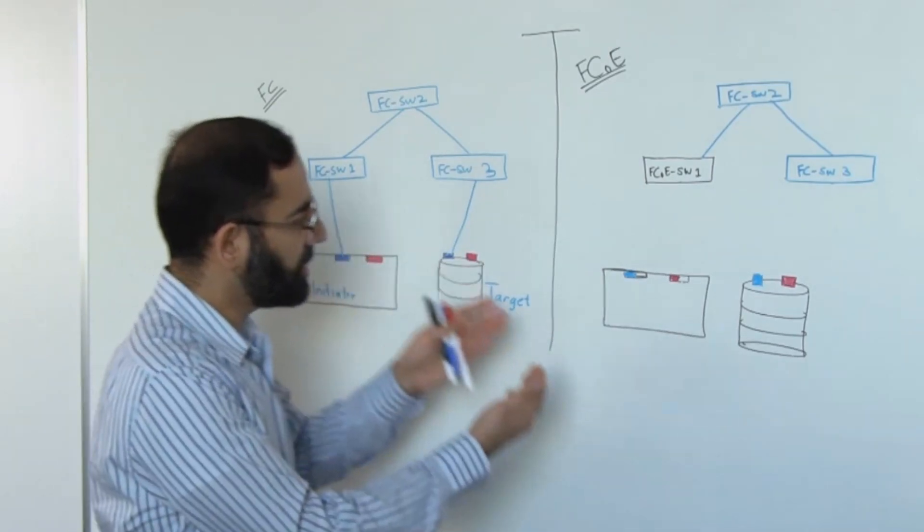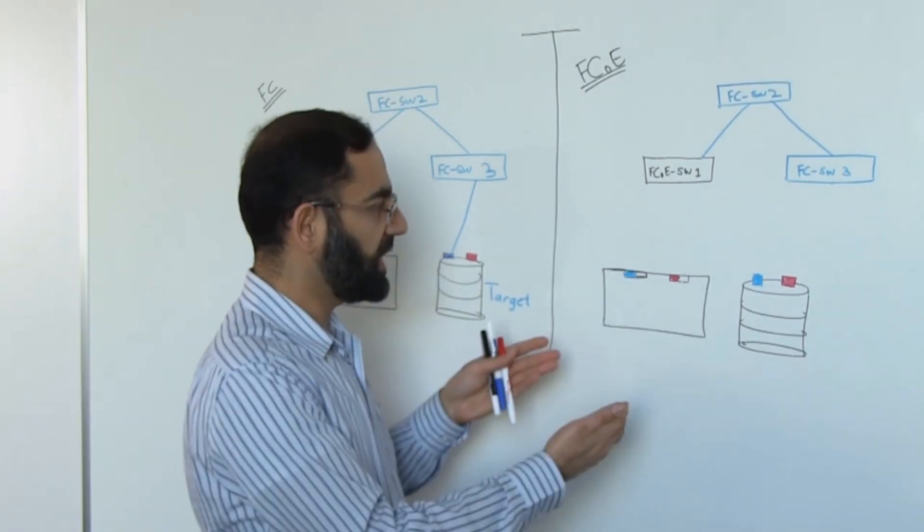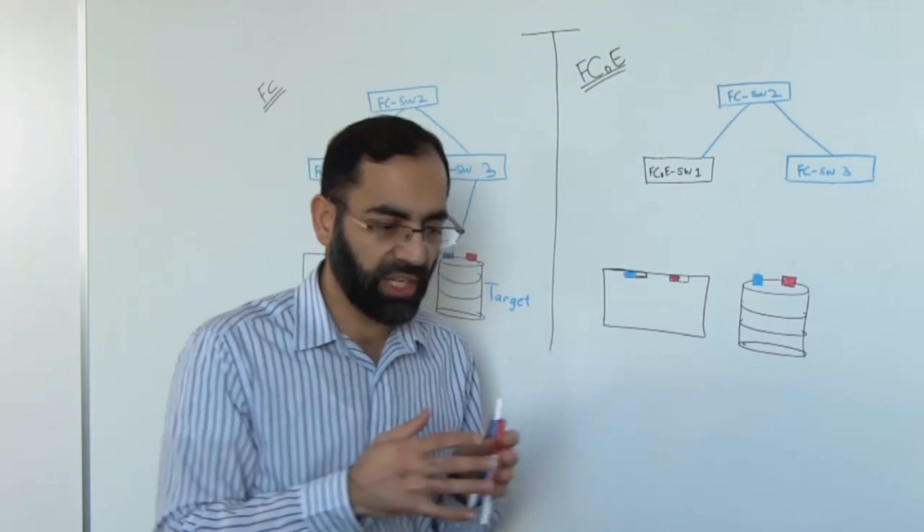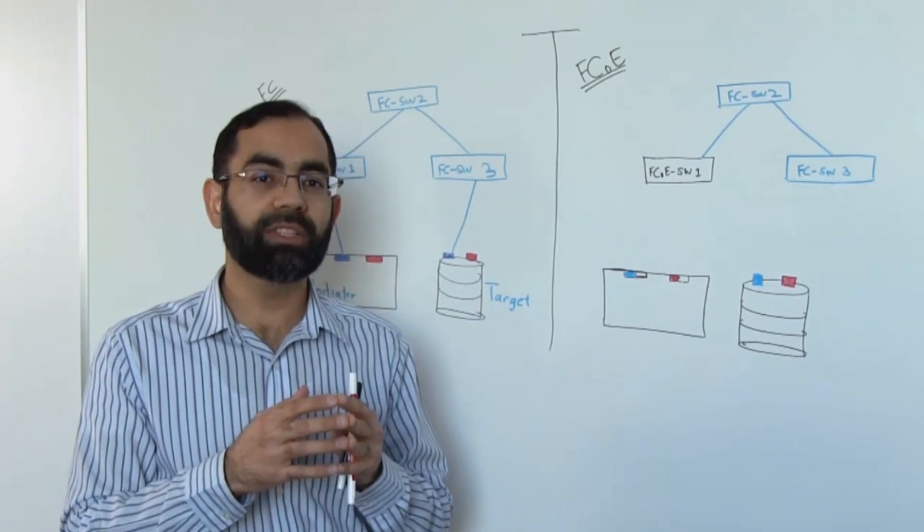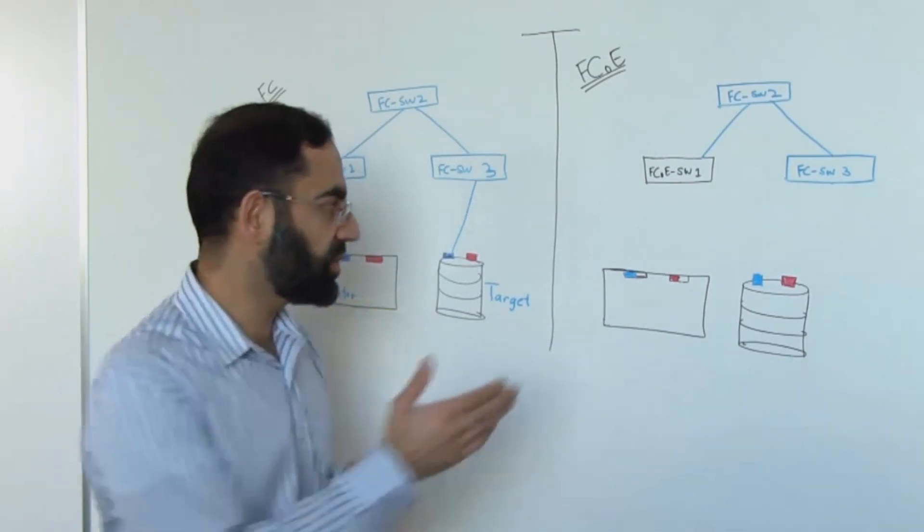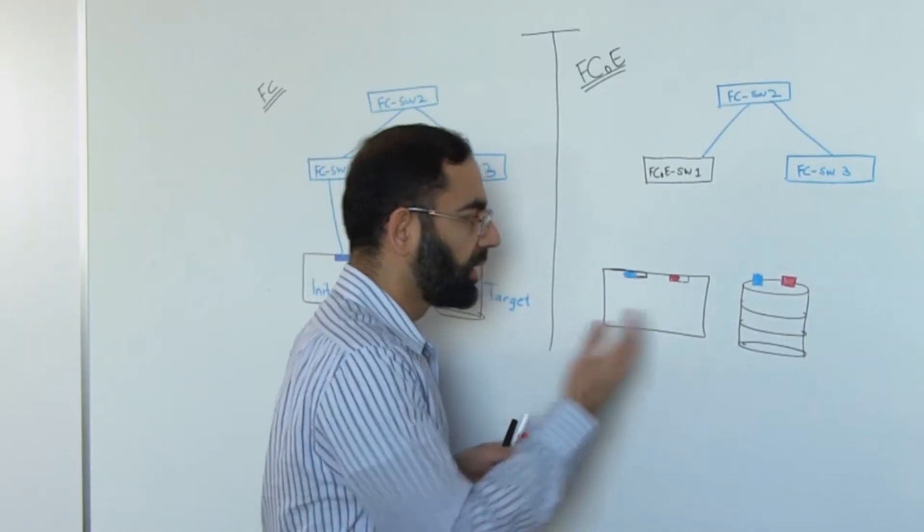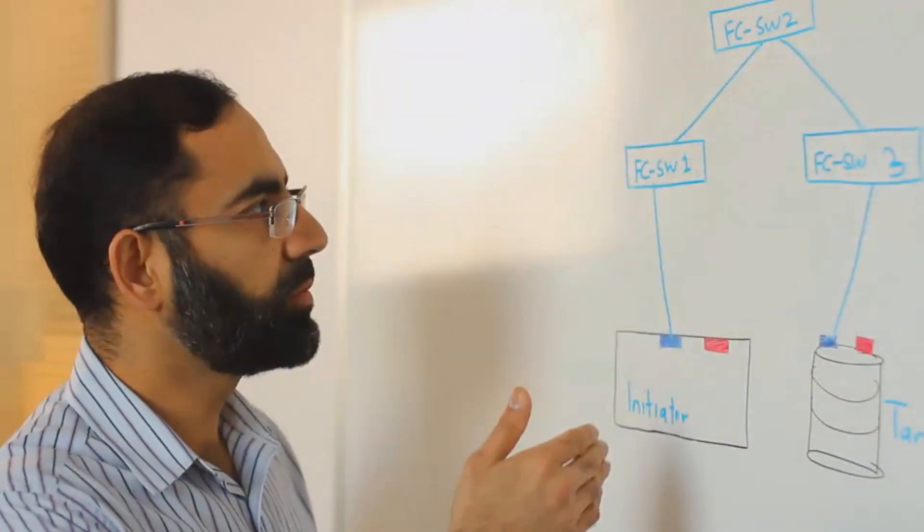When we shift gear towards FCoE network, both of these functionalities are converged in an adapter called CNA, Converged Network Adapter, which is shown here in the picture.